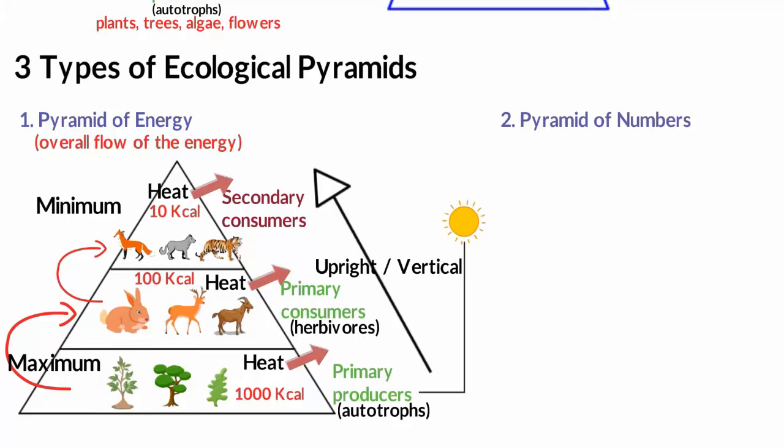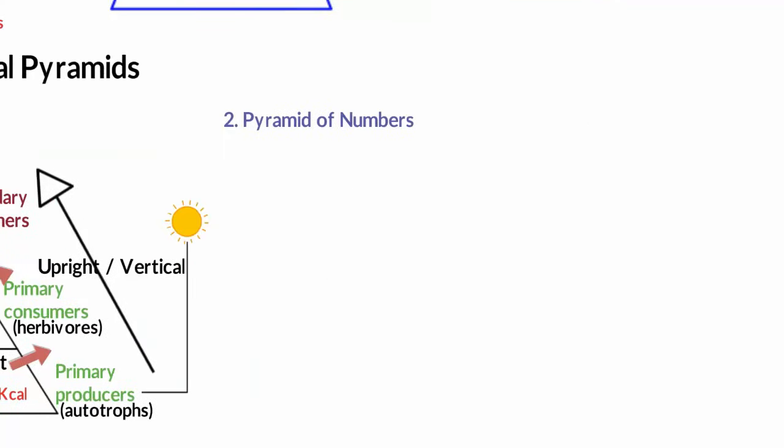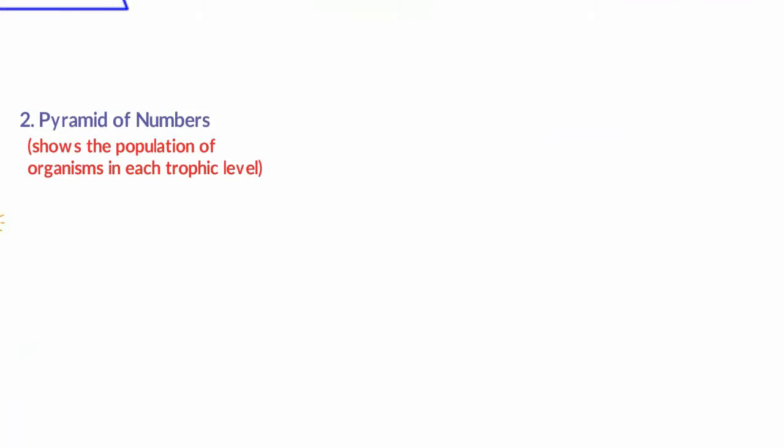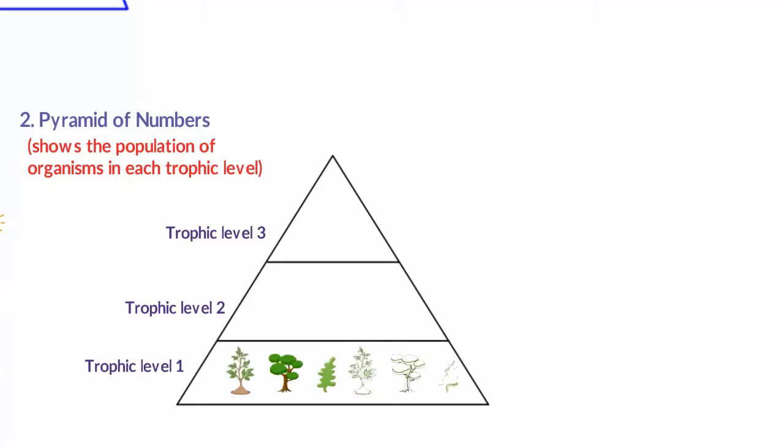The second type of ecological pyramid is the pyramid of numbers. This shows the population of organisms in each trophic level. A trophic level is nothing but the individual bars or levels of the pyramid. One important thing to remember is that when we look at the pyramid of numbers, as we know it is a graphical representation, we do not consider the size of an individual organism. Rather, what we see is a pyramid where the bottom level has a maximum number of individuals in the form of producers. The producers support comparatively fewer number of herbivorous animals. Likewise, herbivorous animals support a fewer number of primary carnivores. And so on.